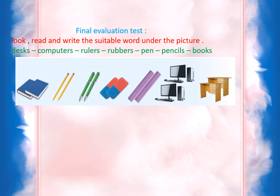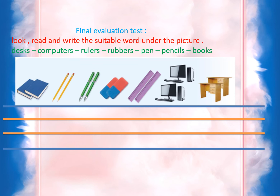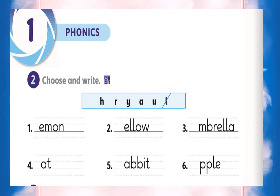Now we come to write the words. Look, read and write the suitable word under the pictures. Which word can be written under picture number one? Yes — books. Picture number two — pencils. Very good. Picture number three — pens. Very good. Picture number four — rubbers. Number five — rulers. And computer.